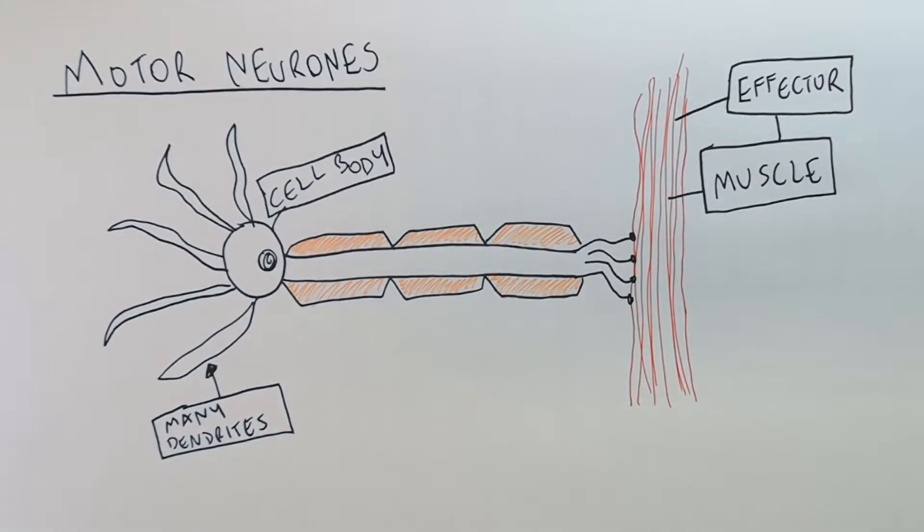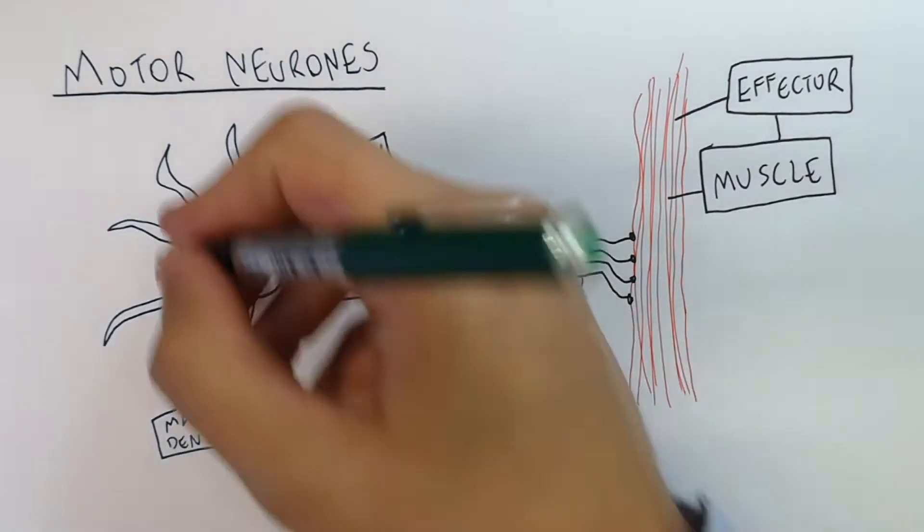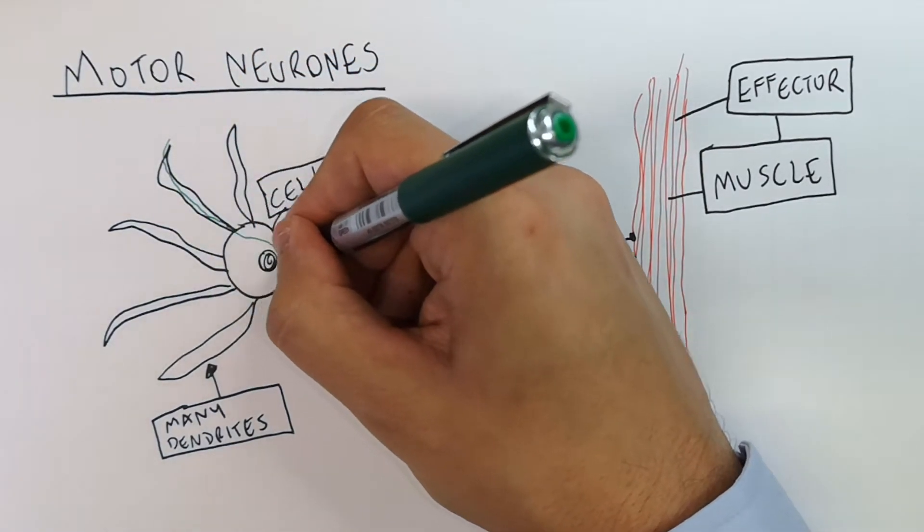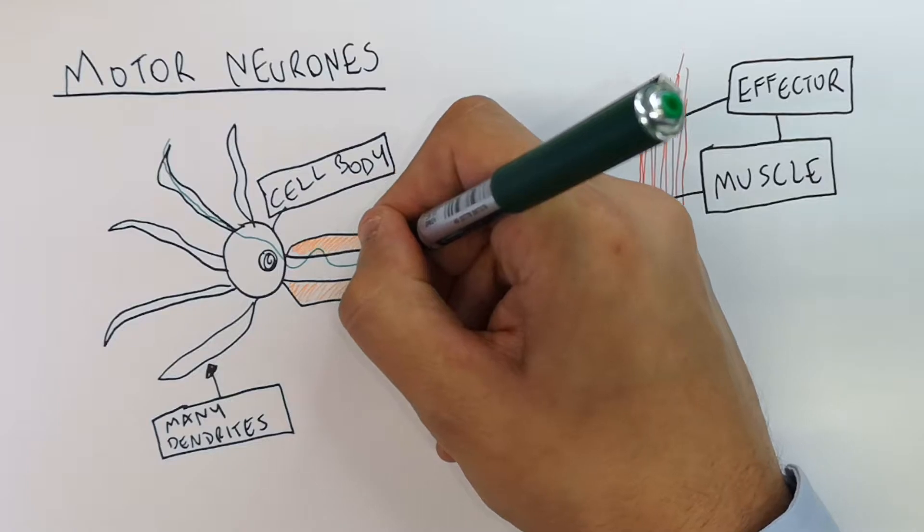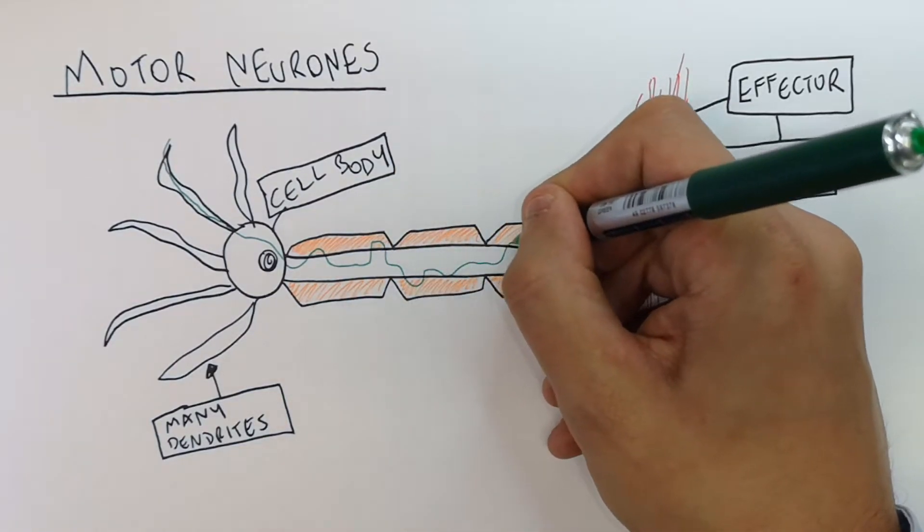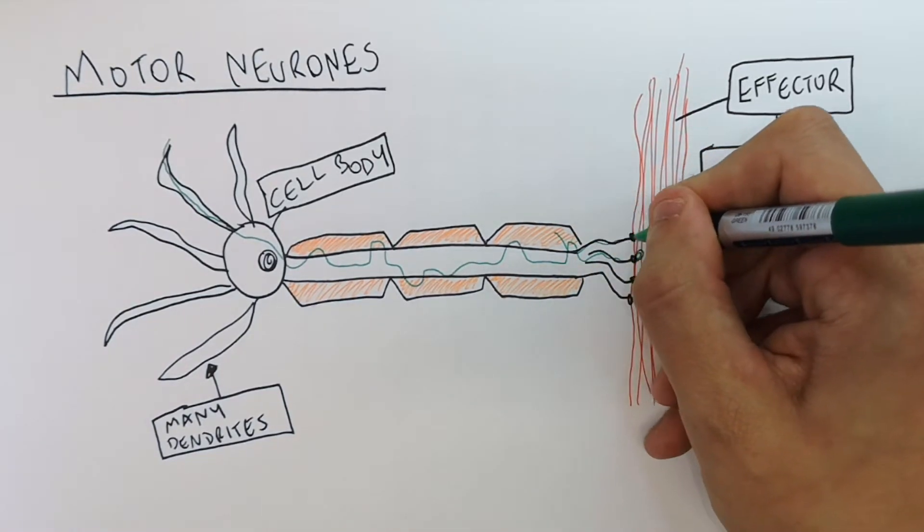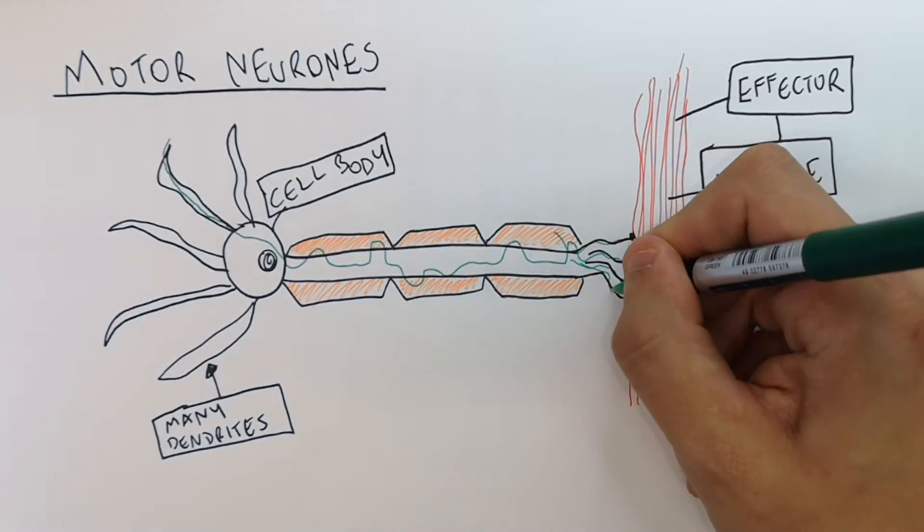So the electrical impulse is going to come from the relay neuron across the synapse and then into the dendrite of the motor neuron and it's then going to go into the axon. It's in the axon and the myelin sheath insulates so it's not lost. It gets to the axon terminals which connects to the effector which then cause the muscle to contract.